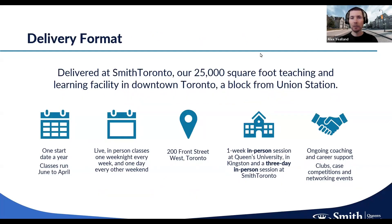In terms of delivery format, the program is taught in person at Smith Toronto, located at 200 Simcoe Street in downtown Toronto, just a block from Union Station. All regular weekly classes are held there in person. The program runs for 12 months, starting once each year in June. We're finalizing the class for the upcoming June intake and starting to recruit for next June as well. The schedule is available on the website.